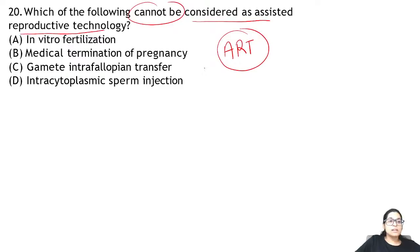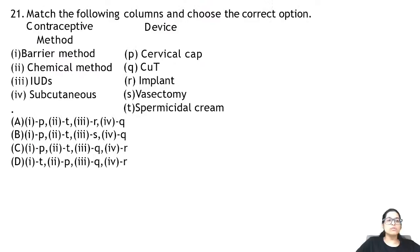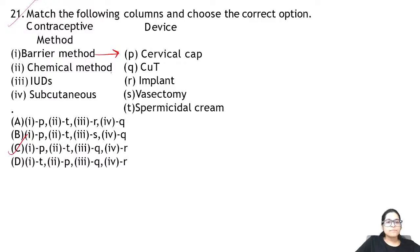Zoology Question 20: which of the following cannot be considered an assisted reproductive technology (ART)? MTP — medical termination of pregnancy — is abortion; it is removing a fetus, not creating a baby. So MTP is not ART. Question 21: match the column. Barrier method — cervical cap. Chemical method — spermicidal cream. IUD — copper T. Subcutaneous — implants. Answer is C.